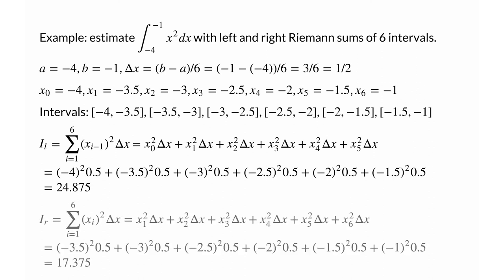For the right Riemann sum, the only difference is that we use x sub i rather than x sub i minus 1 — that is, we use the endpoints x1 through x6. When we add these numbers up, we get 17.375. Our left and right Riemann sums are not too close together, so we should take more than 6 intervals to get a better estimate of the definite integral. The value is probably somewhere between 17 and 25.